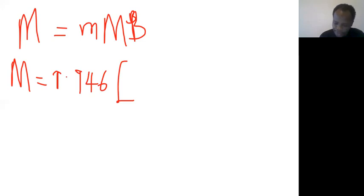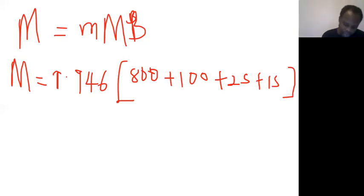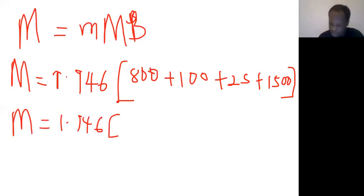...the required reserve which is 10 percent of the deposit which was 1000, that means 100, and we have the excess reserve as 25, and we have the additional bond purchase of 1500. That means M equals 1.946 into brackets. When you add up these, that will give you 2425.